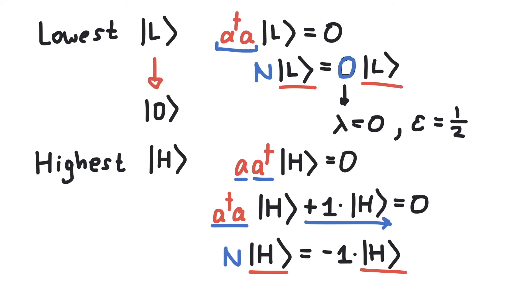But wait, there is a negative eigenvalue. This cannot be, because earlier we saw that lambda equal to zero is our lowest state. So a lambda being equal to minus one would be even below this lowest state, and that cannot be. So we see there is no highest state in the harmonic oscillator.